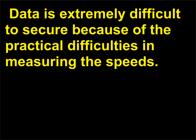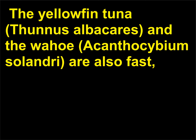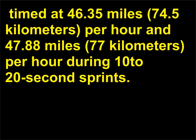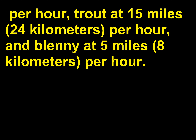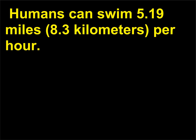Data is extremely difficult to secure because of the practical difficulties in measuring the speeds. The yellowfin tuna, Thunnus albacares, and the wahoo, Acanthocybium solandri, are also fast, timed at 46.35 miles, 74.5 kilometers, per hour and 47.88 miles, 77 kilometers, per hour during 10–20 second sprints. Flying fish swim at more than 40 miles, over 64 kilometers, per hour; dolphins at 37 miles, 60 kilometers, per hour; trout at 15 miles, 24 kilometers, per hour; and blenny at 5 miles, 8 kilometers, per hour. Humans can swim 5.19 miles, 8.3 kilometers, per hour.